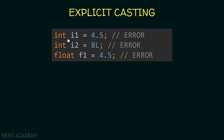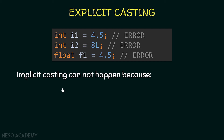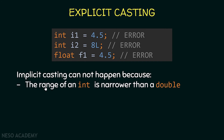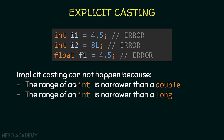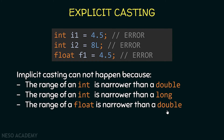Now for explicit casting: if you try to store a double inside an integer, you get an error. The same happens storing a long inside an integer, or a double inside a float. Implicit casting cannot happen here because the range of an integer is narrower than a double or a long, and the range of a float is narrower than a double.